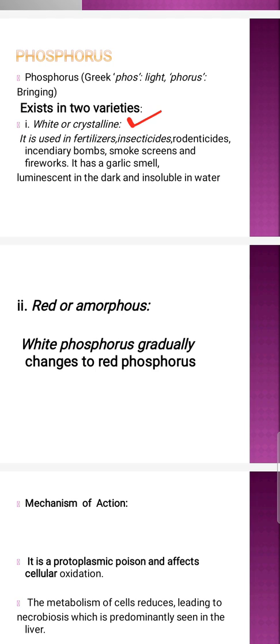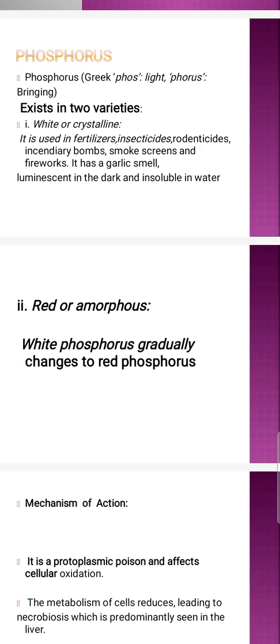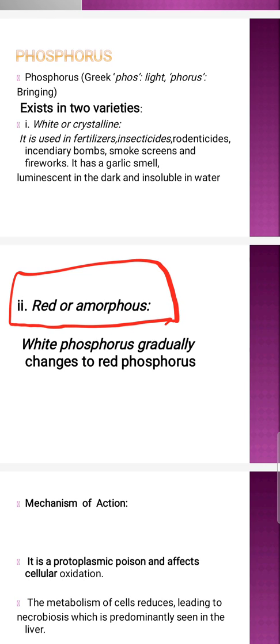Our poison basically exists in two varieties. One is its white or crystalline form, and the second is its red amorphous form. The white crystalline form is mostly present in fertilizers, insecticides, rodenticides, incendiary bombs, smoke screens, and fireworks. It has a garlic smell, is luminescent in the dark, and is insoluble in water. The white crystalline form gradually changes into the red amorphous form.